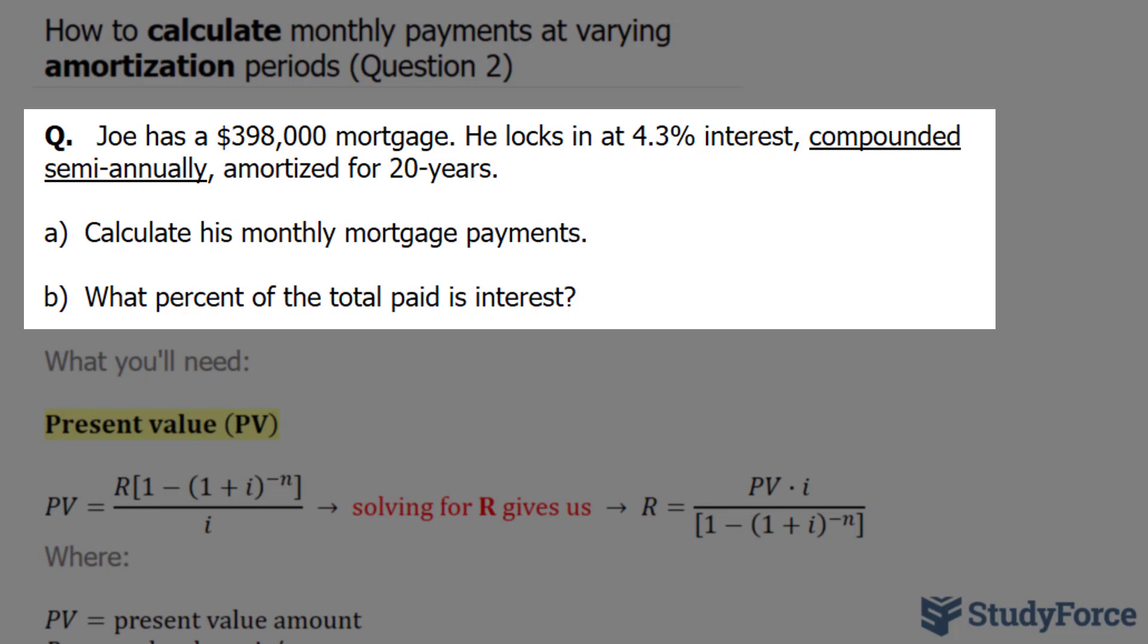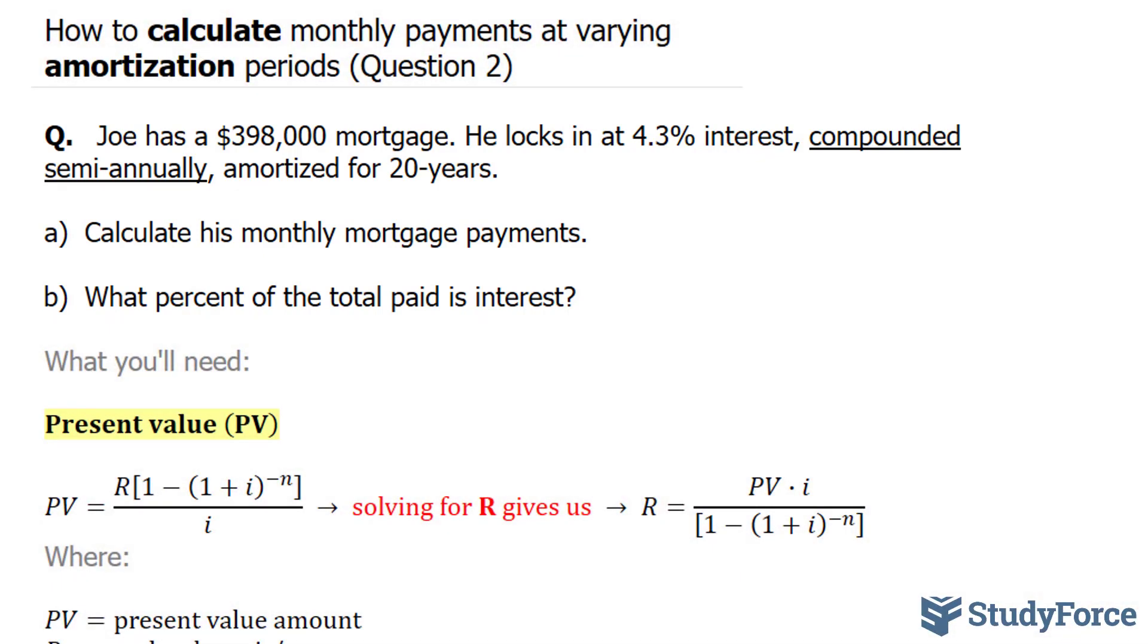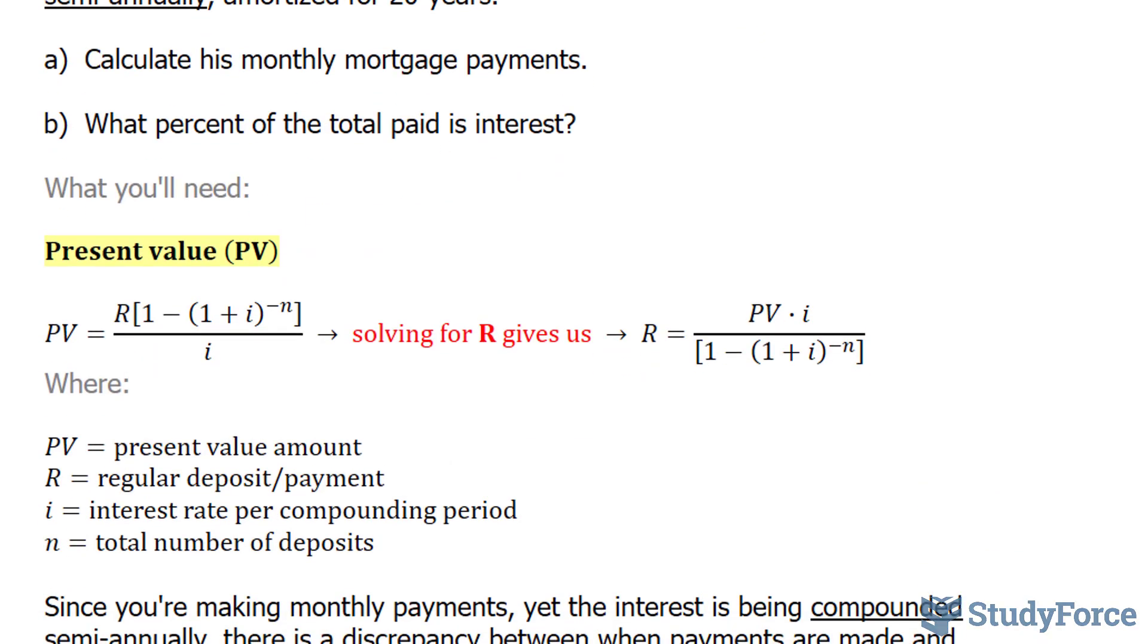Question A asks, calculate his monthly mortgage payments. To do this question, we'll need to use the present value formula that's shown below. And to the right of it, we have the variable R isolated. R in this case represents the regular deposits, which is what we are looking for.